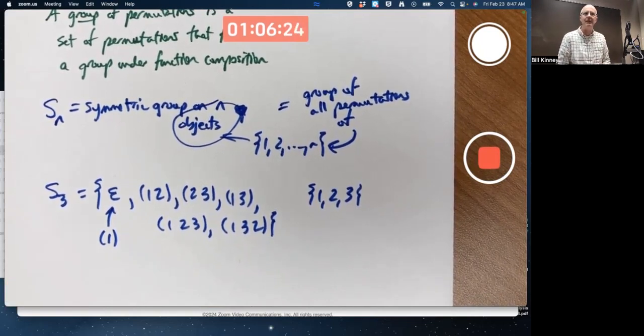We might be interested in what's its group structure under function composition. What does its Cayley table look like?